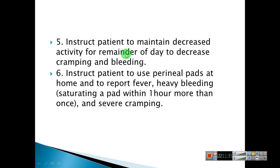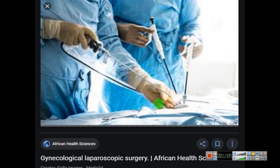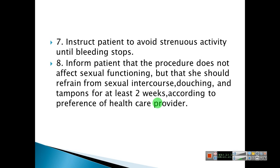Instruct patient to maintain decreased activity for the remainder of the day to decrease cramping and bleeding. Instruct patient to use perineal pads at home and to report fever, heavy bleeding saturating a pad in one hour, or severe cramping — the patient should see the doctor if such complications arise. Instruct patient to avoid strenuous activity until bleeding stops. Inform patient that the procedure does not affect sexual functioning, but she should refrain from sexual intercourse, douching, and tampons for at least two weeks according to the preference of the healthcare provider.